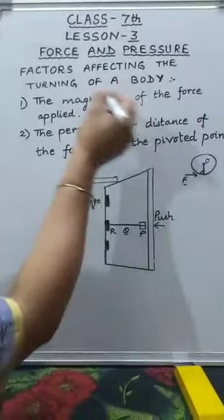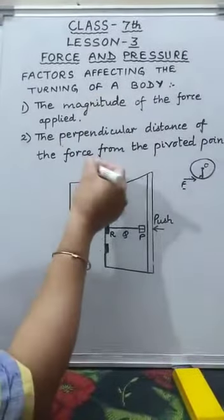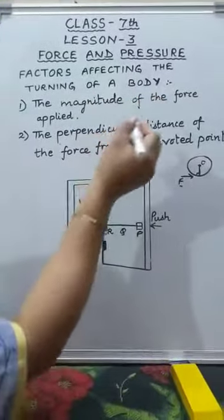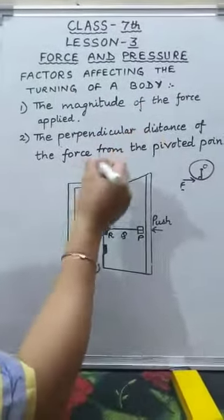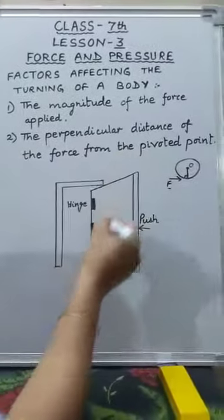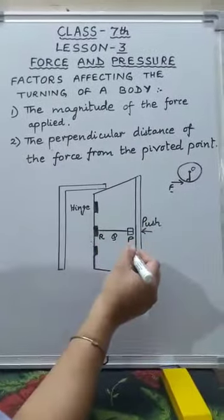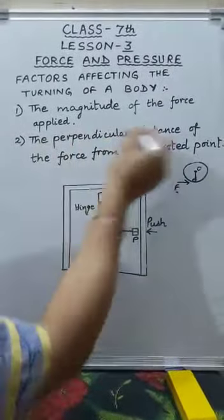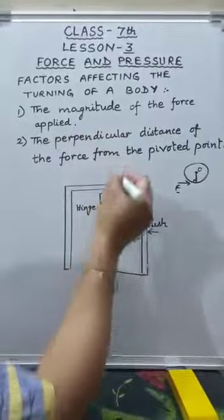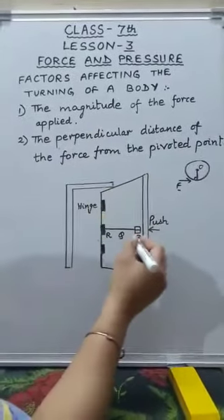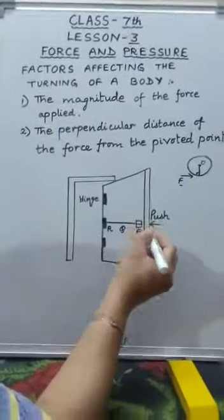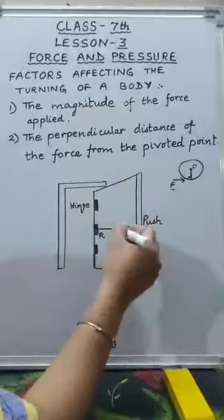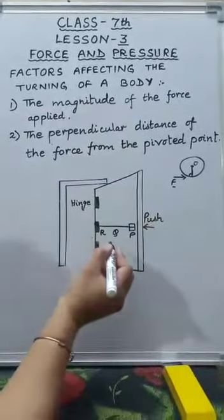The turning effect depends on two factors: the magnitude of the force and the perpendicular distance of the force from the pivoted point. So it is better to increase the perpendicular distance of the force from the pivoted point rather than to apply a larger force on the body.